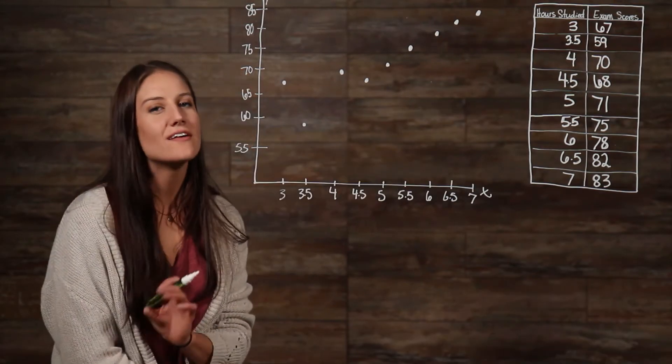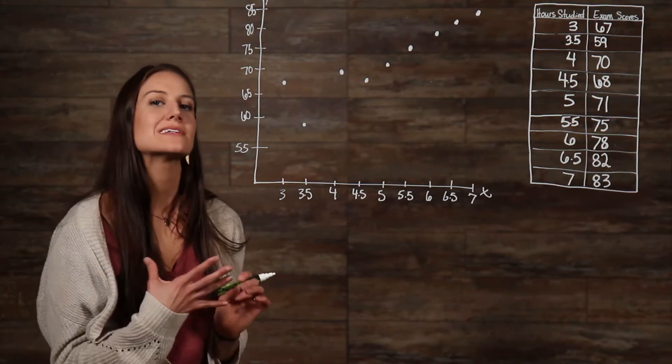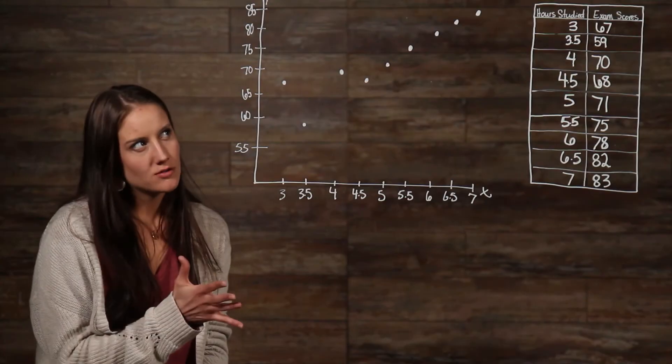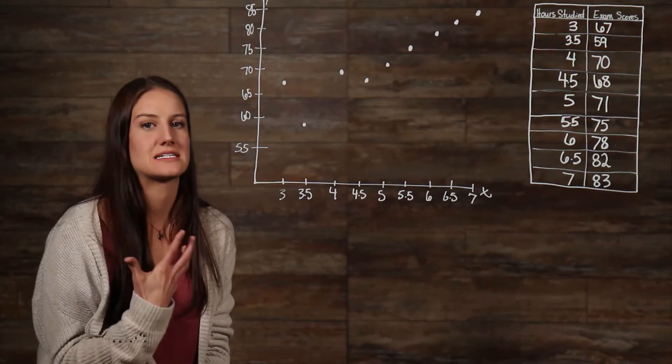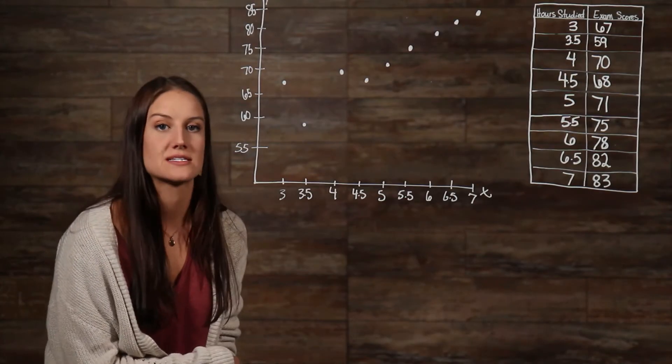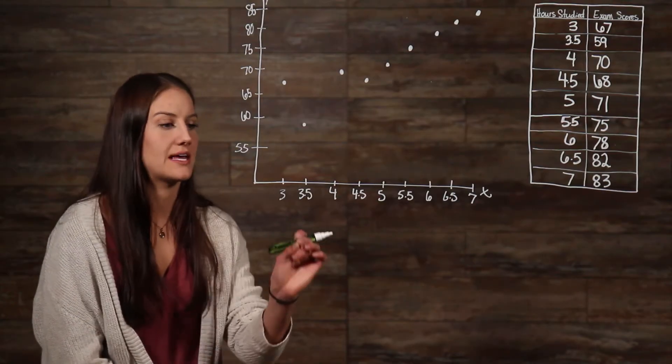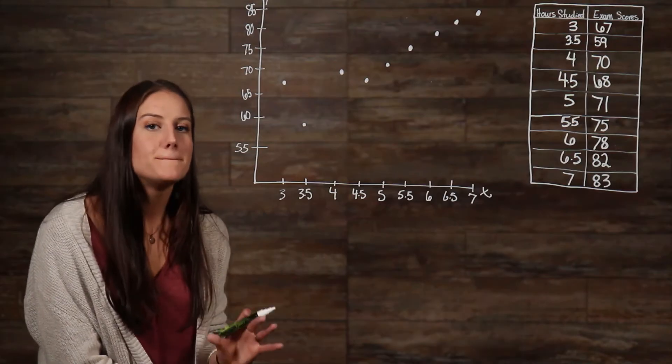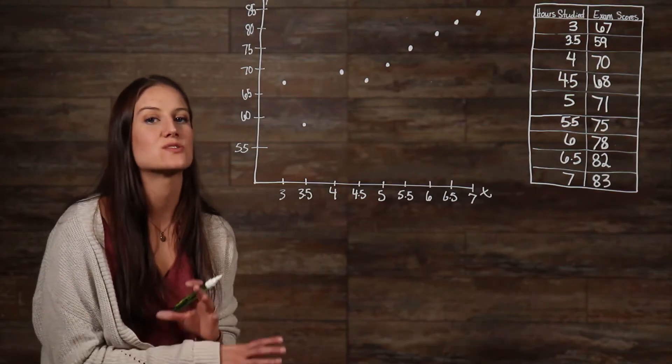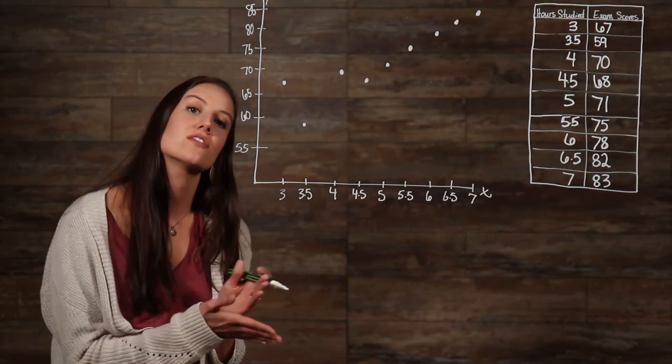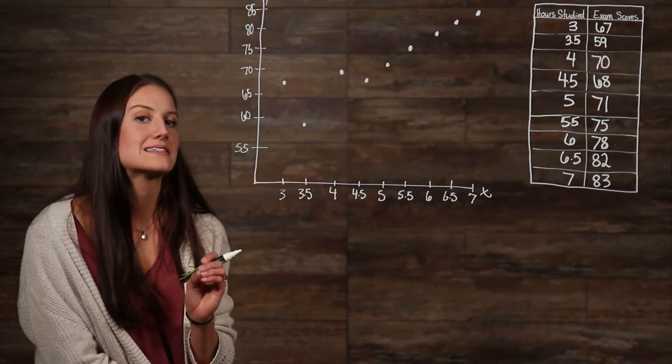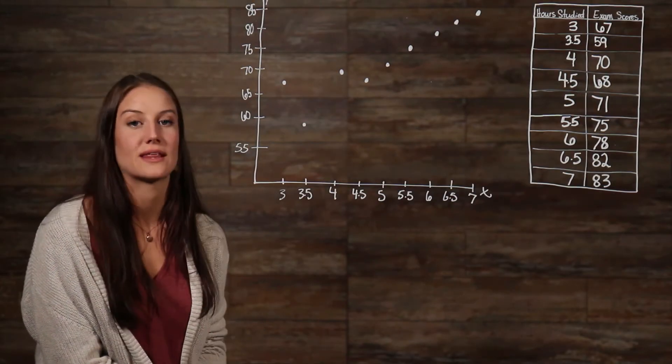Great, now that we have all of our points plotted, we are able to take a look at the relationship between the points. We can see that overall, as the hours of study time increase, the exam scores also increase. There are a few outliers, like our 3.5 right here, and then our 4.5, but overall we can see that as one variable increases, the other variable also increases. When both variables are increasing, this is said to be a positive relationship.